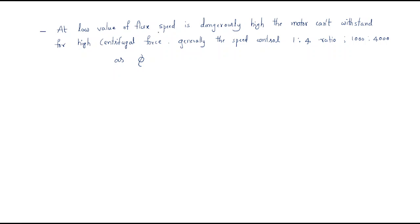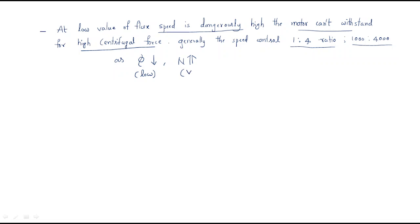At a very low value of flux, the speed becomes dangerously high and the motor cannot withstand the high centrifugal force. Generally the speed control ratio is about 1:2, such as 1000 to 4000 RPM. If flux decreases to a very low value, the speed becomes very high, causing more centrifugal force on the rotor which can damage it. Also, when flux decreases, torque also decreases because torque is proportional to flux multiplied by armature current.